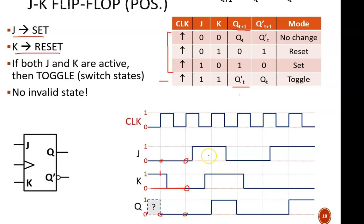At the next positive edge, J equals 1 and K equals 1. This is toggle mode, so Q changes state. It was a 0, now it is a 1.